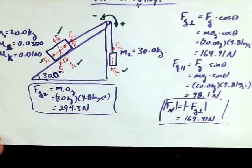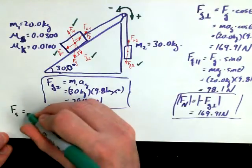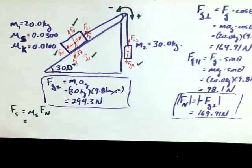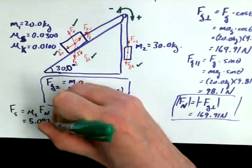So I want to find the friction force on this first object. I'm going to find it two ways. I'm going to find static friction first. So that'll be mu s times f normal. And mu s is 0.03, and f normal is 169.91. So if somebody could just plug those guys into their calculator, 0.03 times 169.91 newtons.